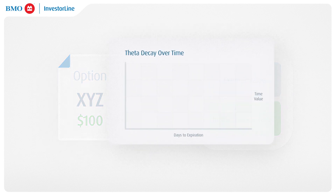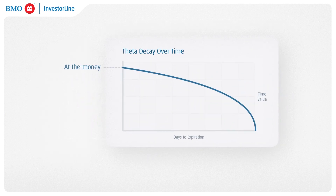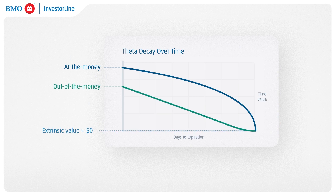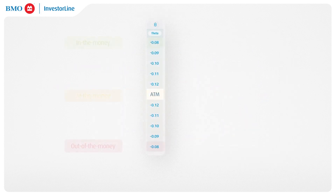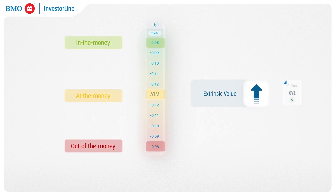Theta tends to behave differently depending on whether the option is at the money or out of the money. Since the extrinsic value of an option will generally be zero at expiration, out of the money options will have less extrinsic value in them, as there is a lower probability of the option expiring in the money. At the money options, however, will have a lot more extrinsic value. Theta values are centered around at-the-money options, and therefore will have higher extrinsic value priced into the premiums.